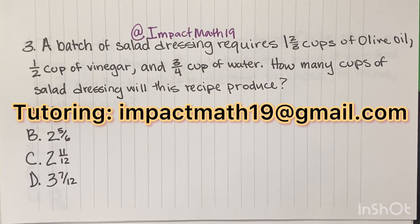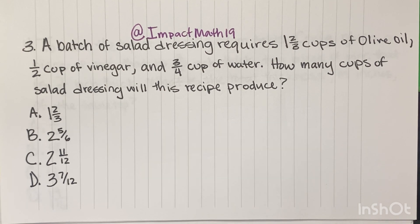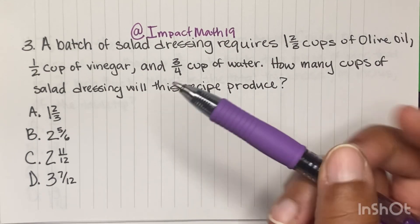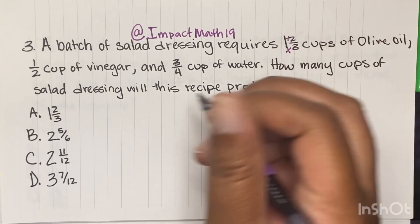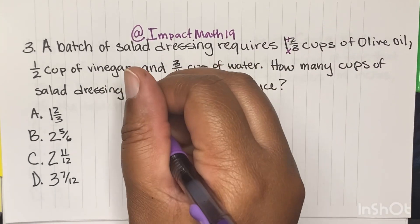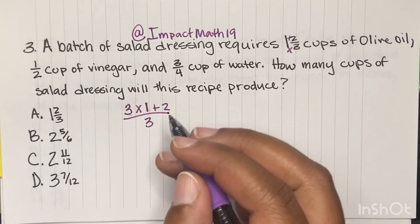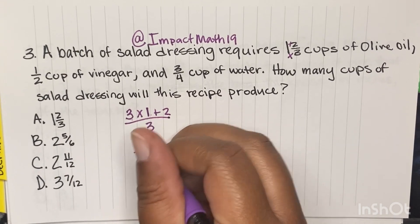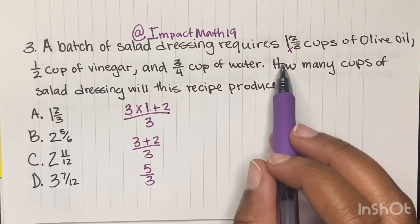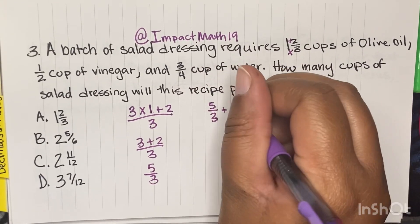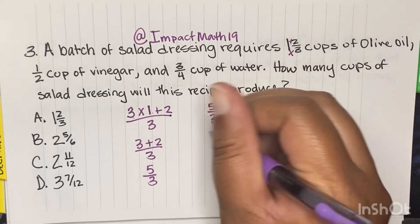A batch of salad dressing requires 1 and 2 thirds cups of olive oil, a half cup of vinegar, and 3 fourths cups of water. How many cups of salad dressing will this recipe produce? First, we want to change this mixed number into an improper fraction. We times then add: denominator 3 times the whole number 1, plus 2, all over 3. So 3 times 1 is 3, plus 2 is 5 over 3. Now we're going to add 5 thirds plus 1 half plus 3 fourths to figure out the total.